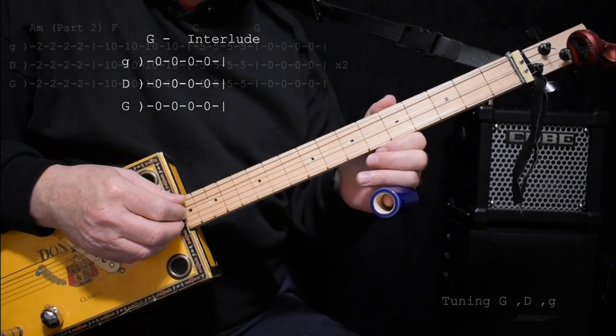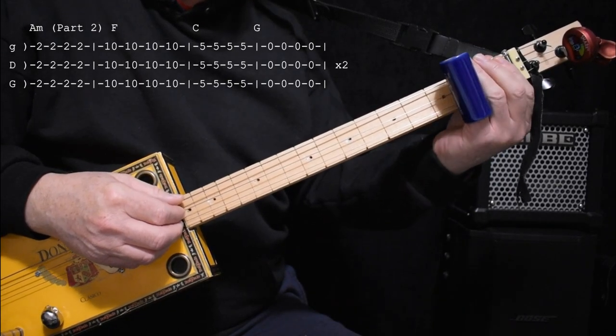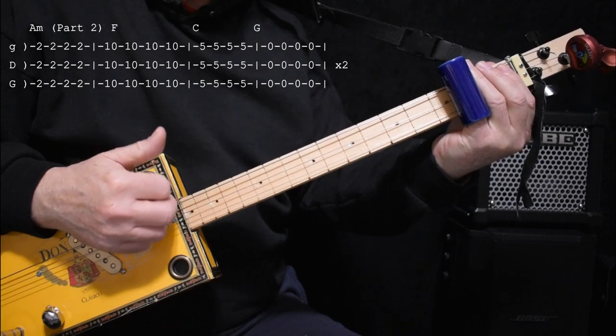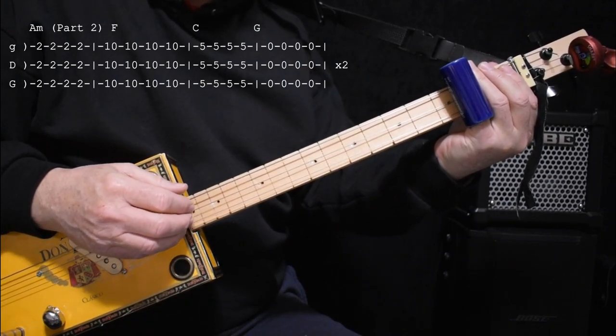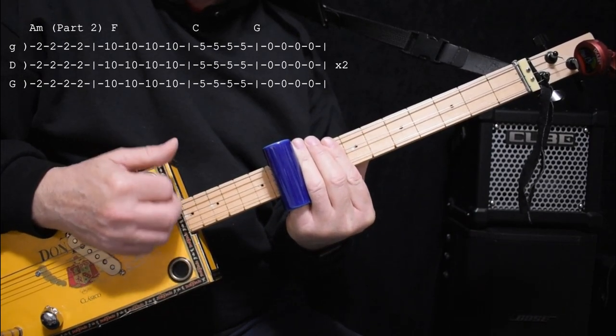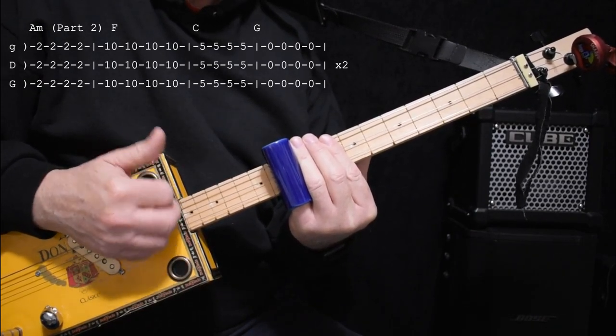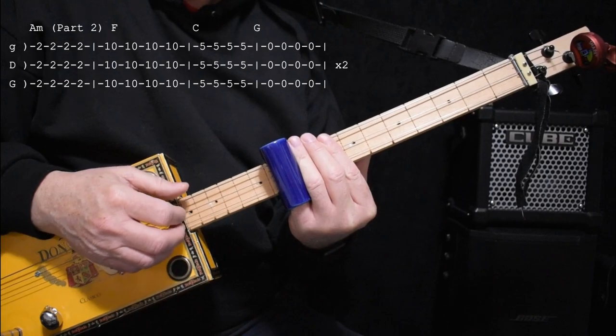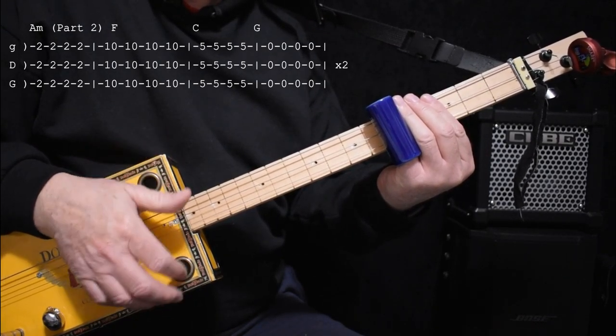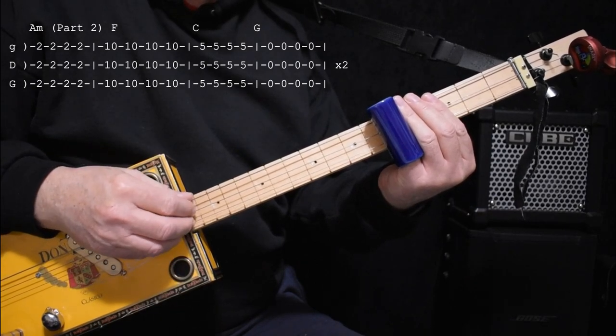So now we're into part two of the song, which is A minor again, four beats. And then an F chord, which for us is up on fret 10. A C chord. And then G chord.